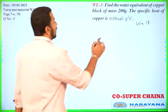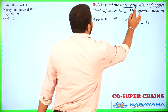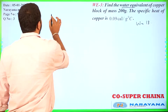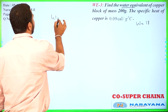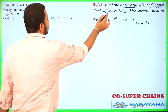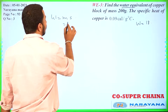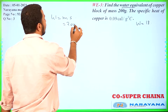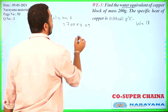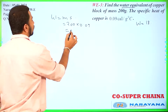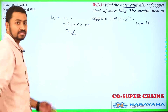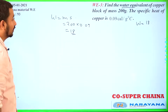Here we have to find the water equivalent. Water equivalent W equals ms. Just substitute the value 200 into 0.09 and it will come as 18, and that will be the answer of this question.